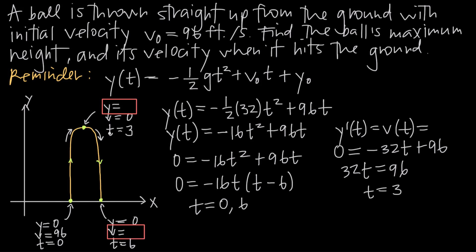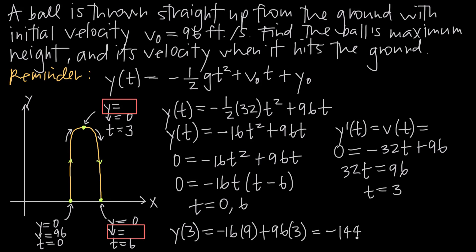Since the ball reaches its maximum height at t equals 3, we plug t equals 3 into the position function: y of 3 equals negative 16 times 3 squared plus 96 times 3. That's negative 16 times 9 plus 288, which equals negative 144 plus 288, giving us positive 144. So the maximum height of the ball is 144 feet, attained at t equals 3 seconds.